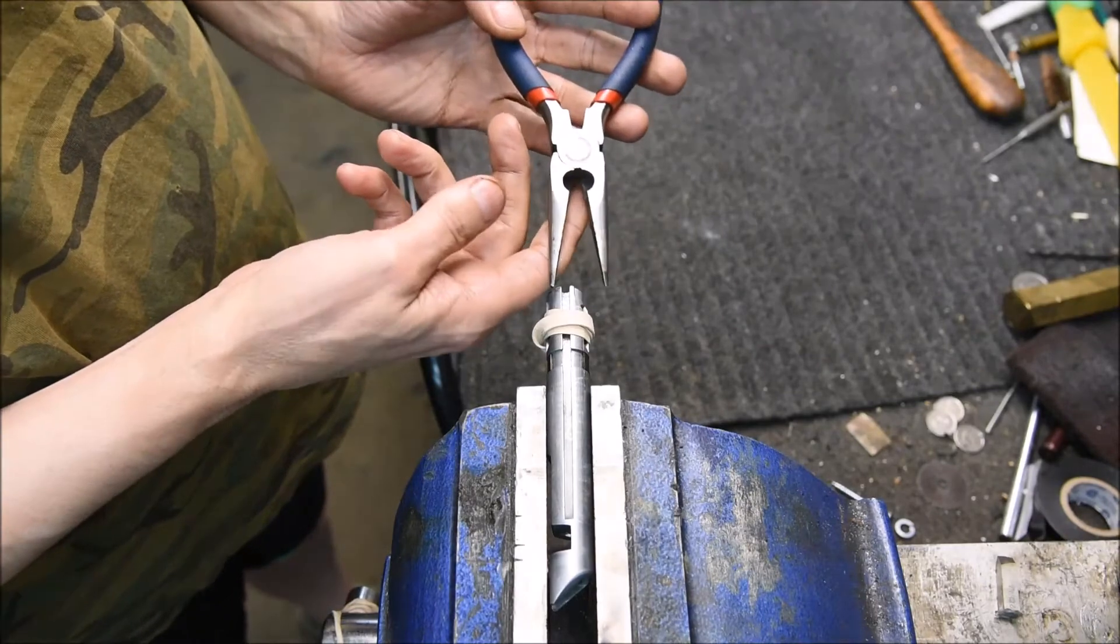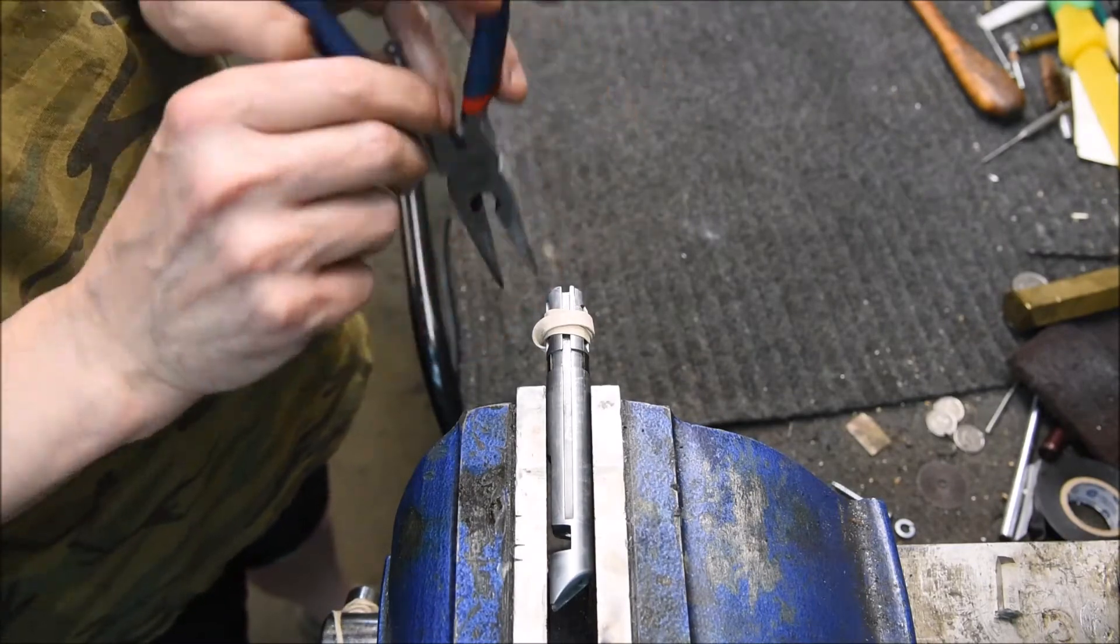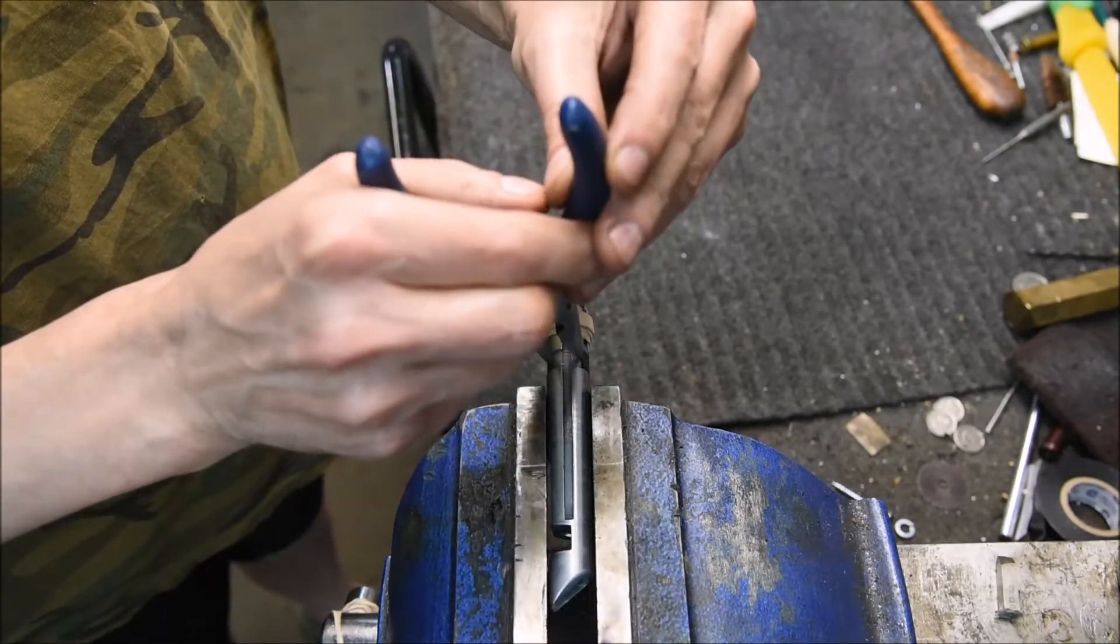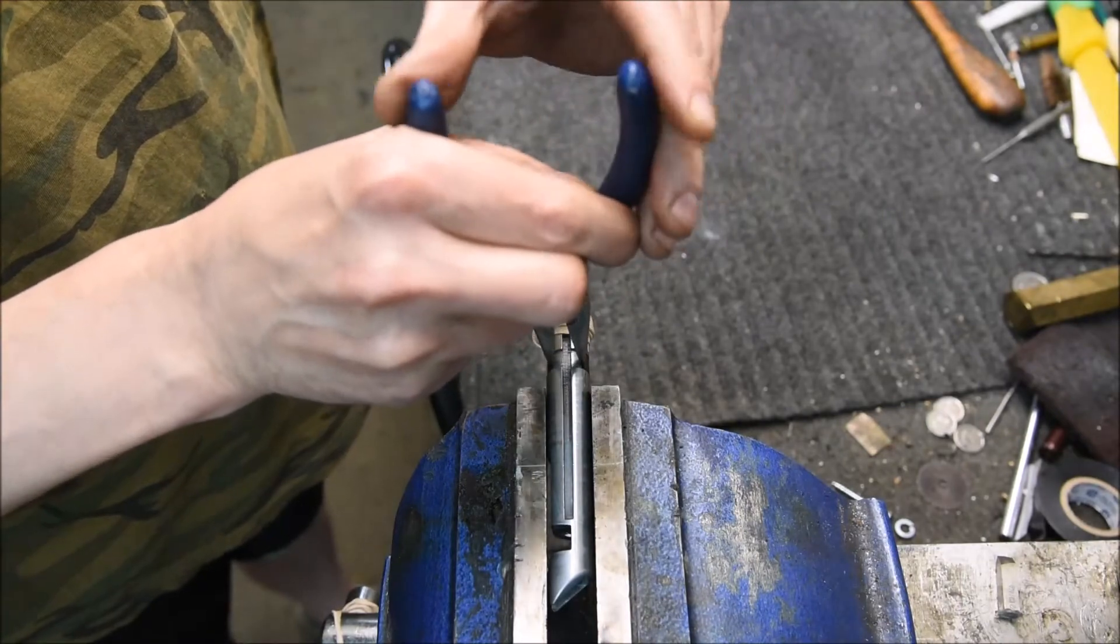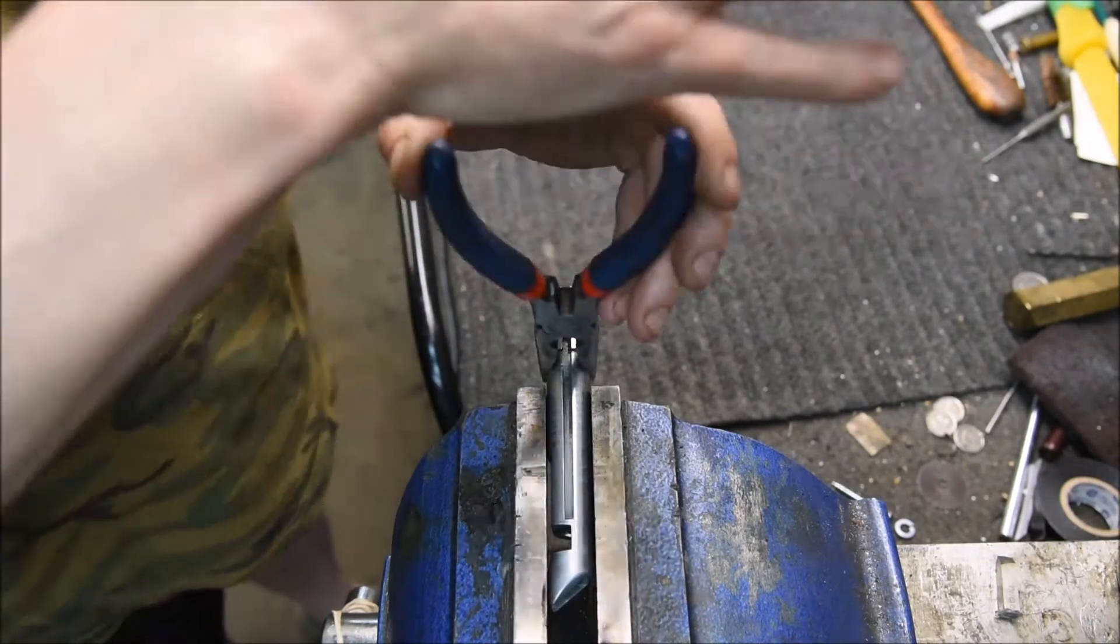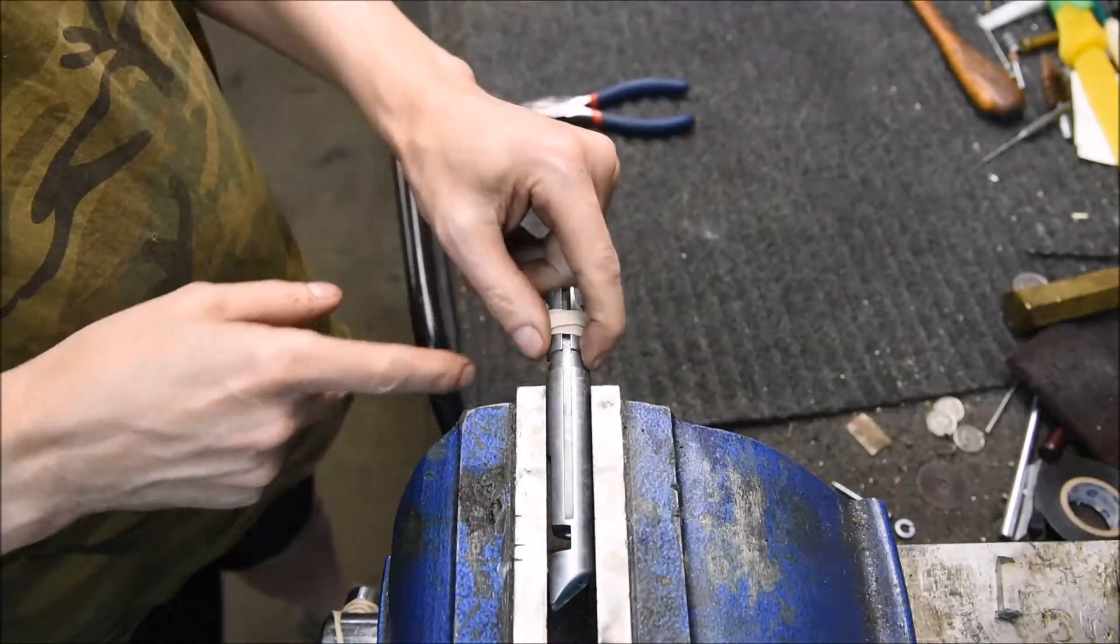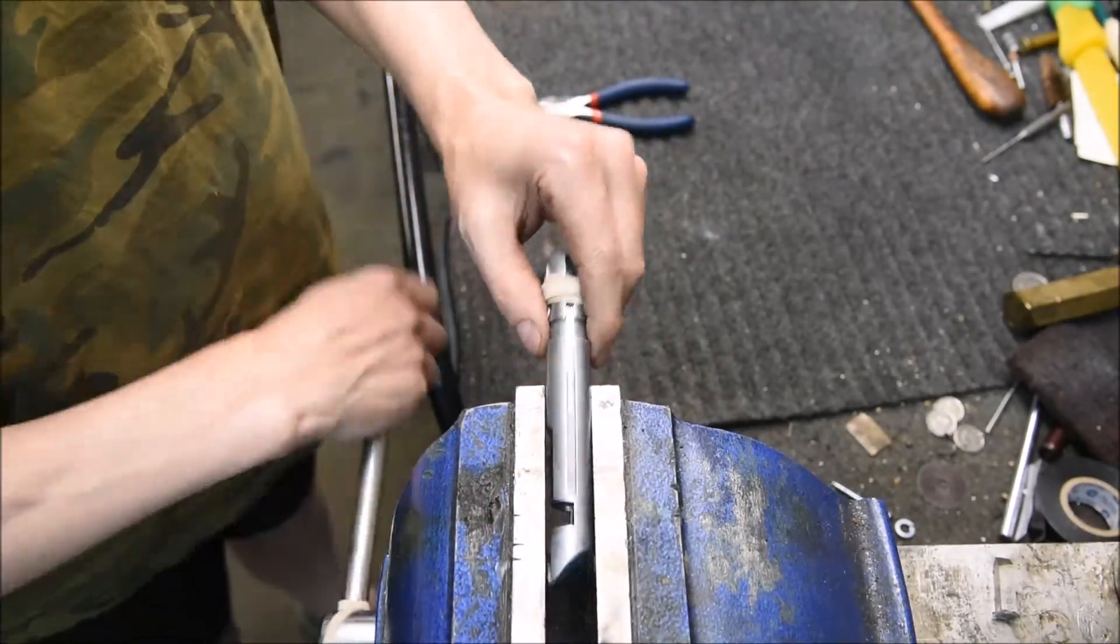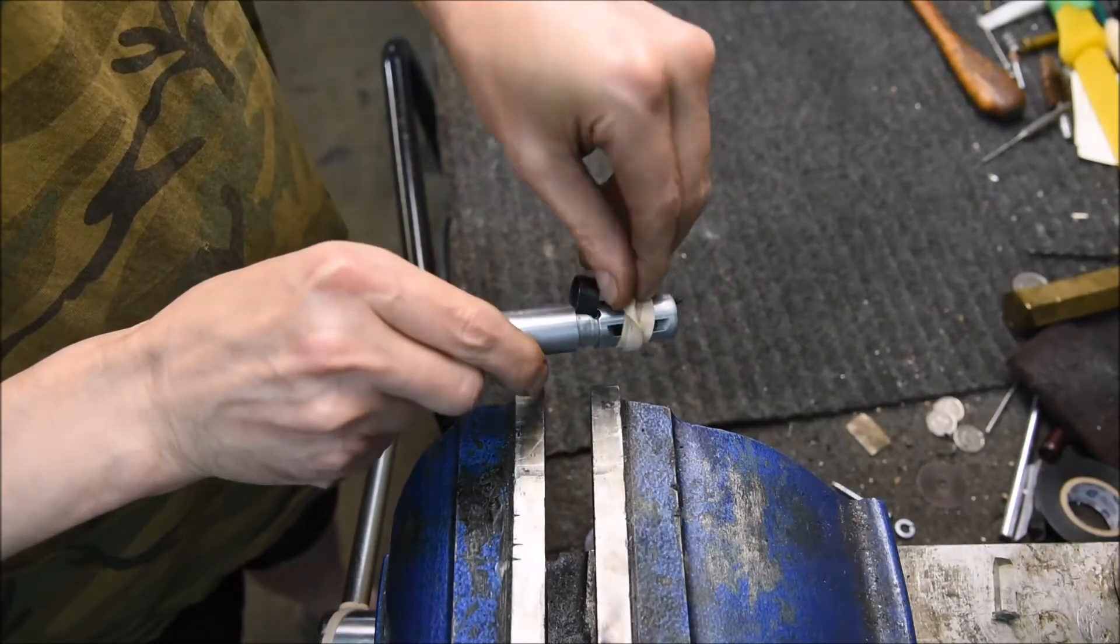Then take a pair of common needle nose pliers, rest them on the ends of the collar and give it a short swat with your hand and the extractor will pop right out and it won't go flying across the room.